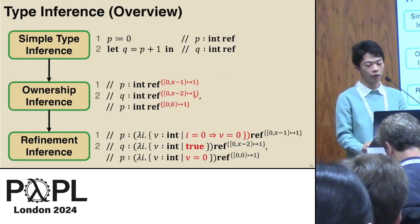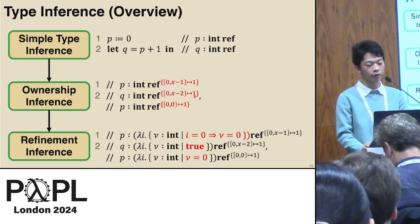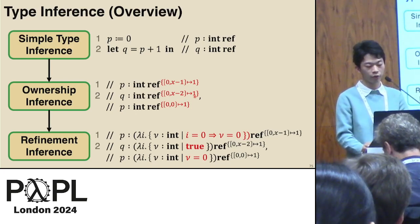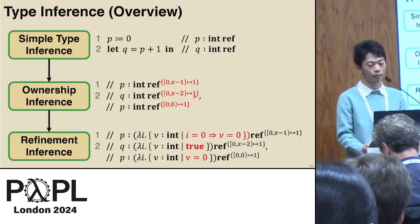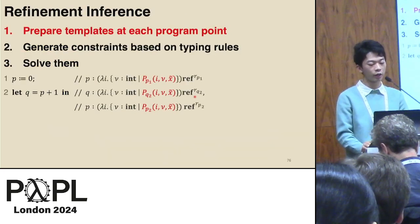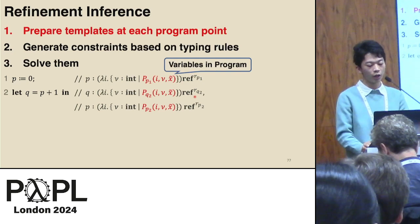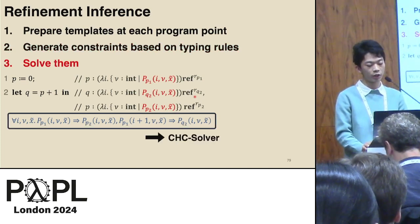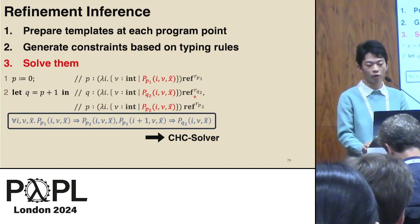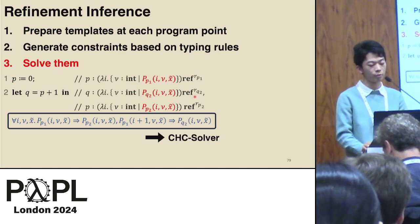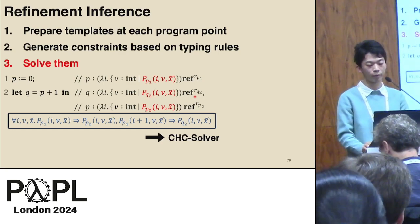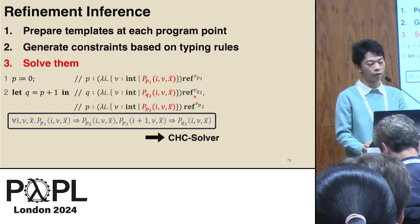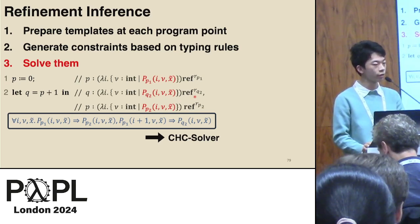This concludes the ownership inference, and the next step is refinement inference. This process is almost the same as consort. A template is prepared at each program point where x represents variables in the program. Constraints are generated based on the typing rules in the form of constrained Horn clauses, and we use a CHC solver to solve them. If a refinement can be inferred, then we can say the type inference is successful.